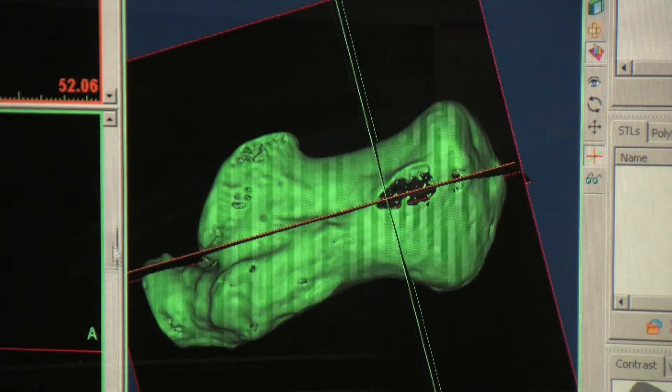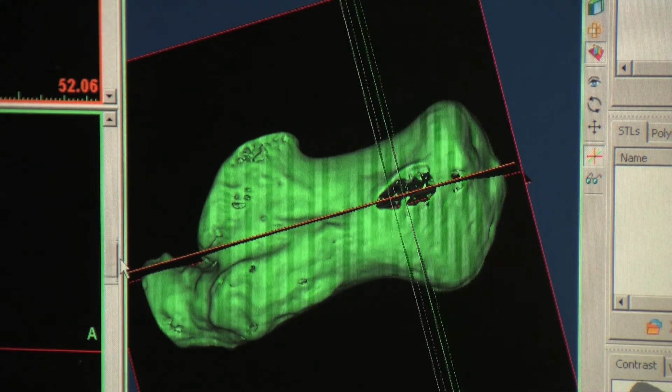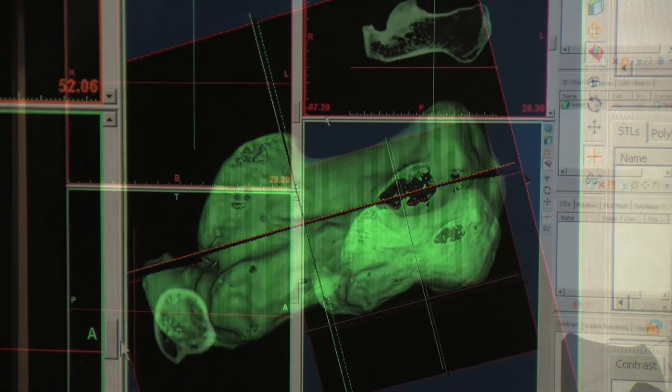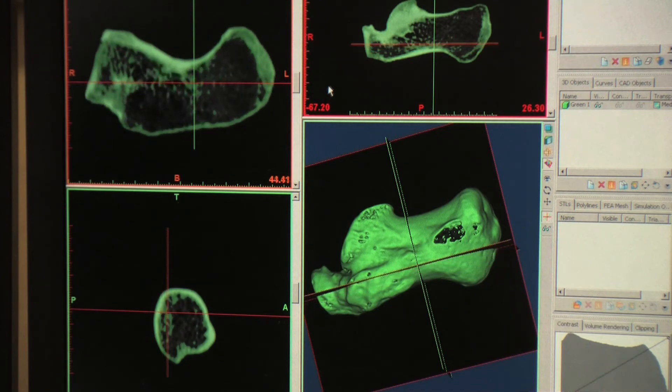With laser scanning, it essentially just captures the outer surface because the laser can't see inside the bone, whereas CT scanning actually sees inside the bone as well, so they're complementary technologies.